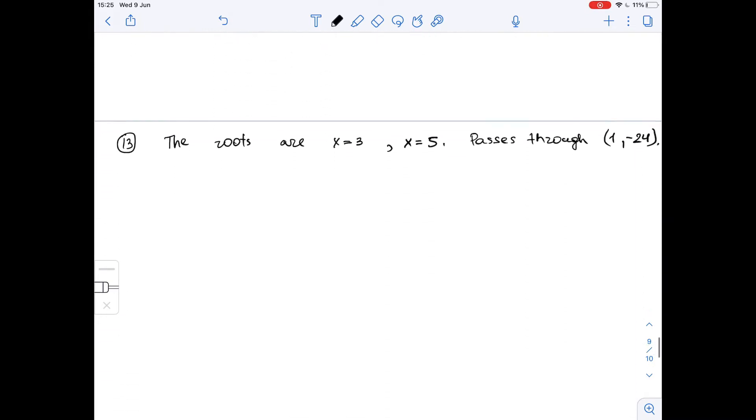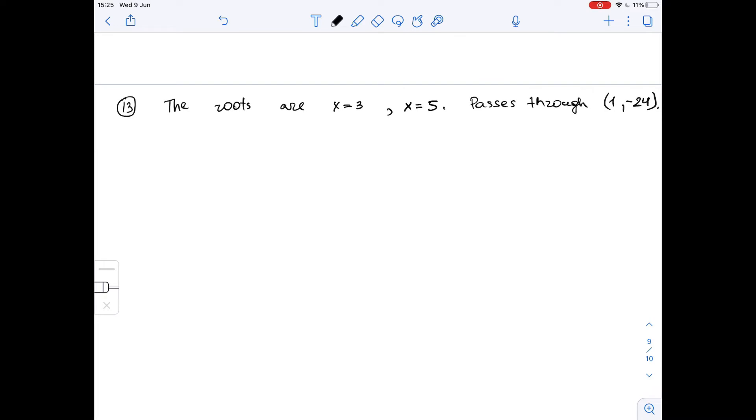Let's get to part 2. Here we know the roots of our equation, which are x equals 3 and x equals 5. But we also know that the function contains the point (1, negative 24), and we need to find an equation for this quadratic function.